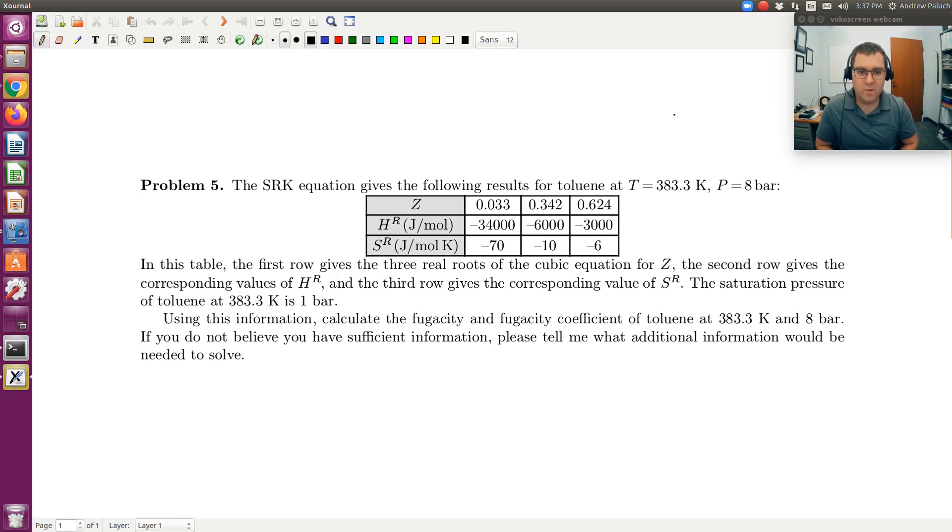I'm going to pause there, because if my temperature is 383.3 kelvin and 8 bars, and if at that same temperature, 383.3 kelvin, P_sat is 1 bar. So if P is greater than P_sat, what phase do I have? If I have P is greater than P_sat, I must have a liquid.